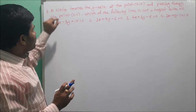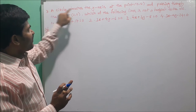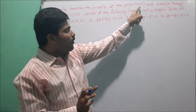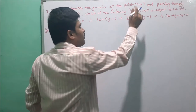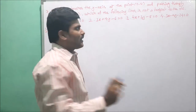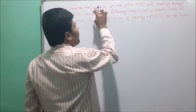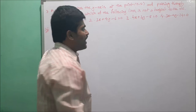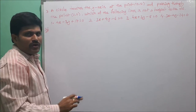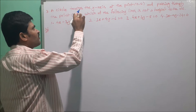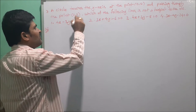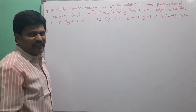We observe that the circle touches the y-axis and is given point (0, 4) — the x-coordinate is 0, so (0, 4) lies on the y-axis. Also, the circle passes through (2, 0), where the y-coordinate is 0, meaning this point lies on the x-axis.